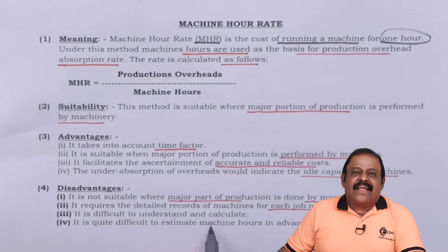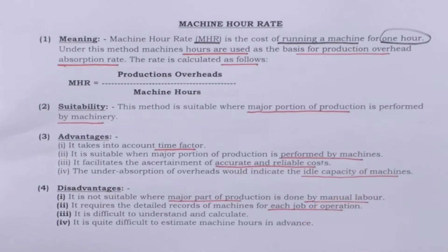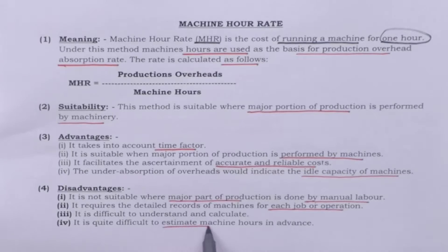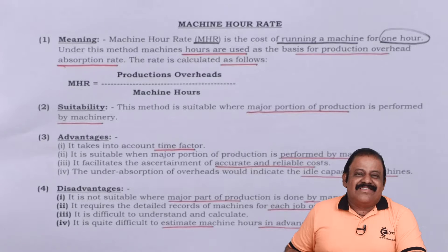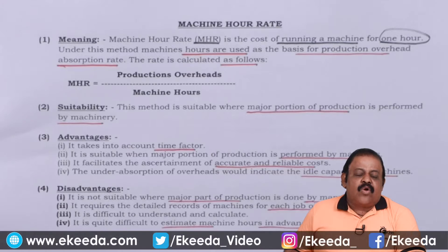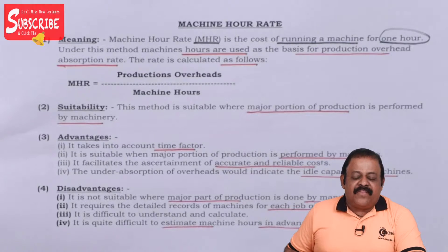It is difficult to understand and calculate, requiring statistical methods and knowledge of the production process. It is quite difficult to estimate machine hours in advance — when we actually use machineries we come to know about the actual machine hours consumed. Therefore, it is difficult in advance to estimate the cost of that particular machinery in relation to machine hours, making estimated cost calculation somewhat difficult under this method.